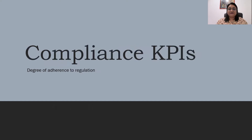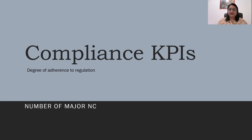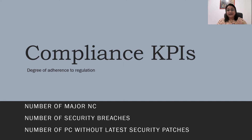The next KPI is the Compliance KPI. Compliance KPI measures the degree of adherence to regulation — not counting percentages, but measuring whether a certain regulation is being followed. Examples include the number of major non-conformances from internal or external audits, number of security breaches, number of security incidents causing data loss or business impact, or the number of PCs without the latest security patches.